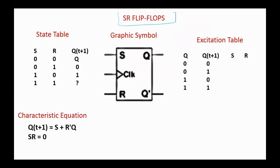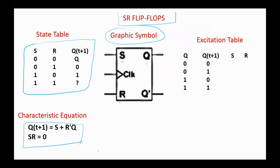First, SR flip-flops. Here is the graphic symbol. We have two inputs S and R, and two outputs Q and not Q. Here is the state table for the SR flip-flop. And here we have the characteristic equation: Q(T+1) equals S or (not R) times Q(T), provided that S and R equals zero. Because when S and R are both one, the next state is undefined.